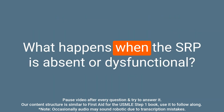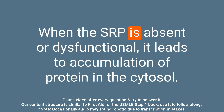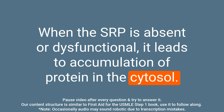Question: What happens when the SRP is absent or dysfunctional? Answer: When the SRP is absent or dysfunctional, it leads to accumulation of protein in the cytosol.